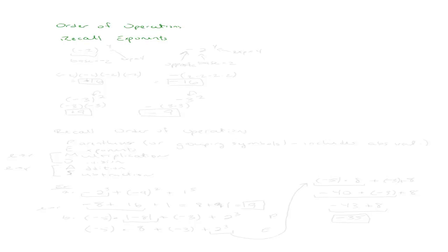In this section, we're going to talk about the order of operations with respect to the integers. Before we start off, let's recall a little bit of what we learned about exponents. Let's look at the difference between negative 2 to the 4th power and the opposite of 2 to the 4th power, and examine the difference between these two problems.